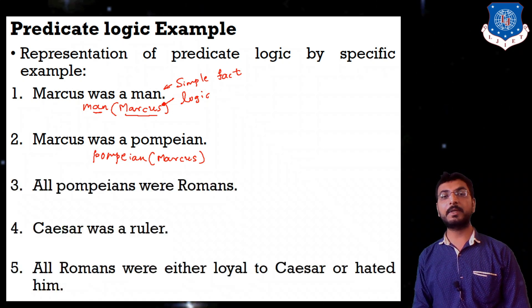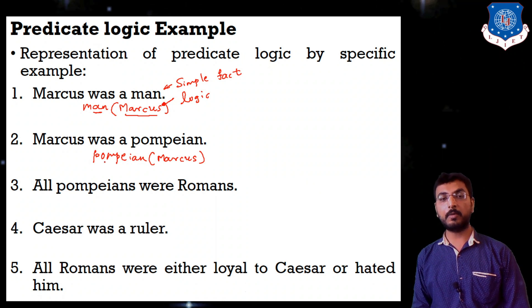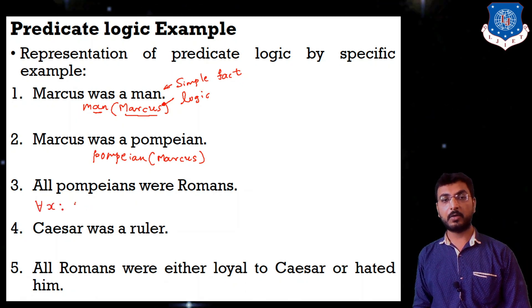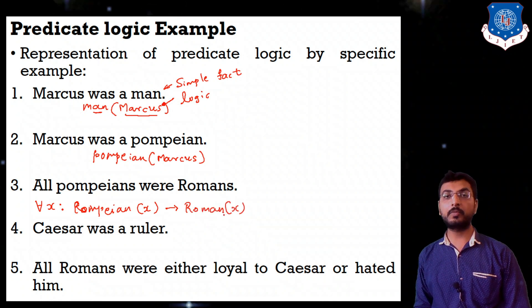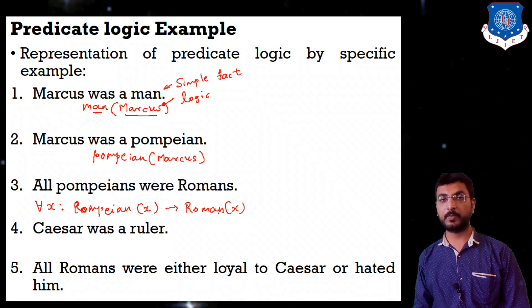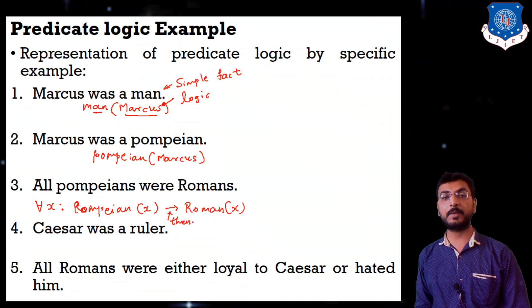Third statement: 'All Pompeians were Romans.' For this we use a universal quantifier. For all X: if pompeian(X), then roman(X). As I told you earlier, Gujaratis are Indians. So all Pompeians are Romans — if X is Pompeian, then X is Roman also. Next: 'Caesar was a ruler.' This statement has no quantifier, so it is directly written as ruler(Caesar).